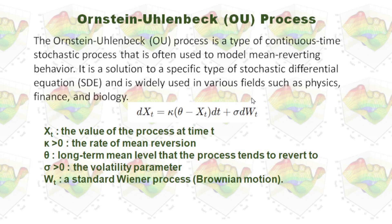Let's take a look at this formula. x(t) is the value of the process at time t. Theta is the long-term mean level that the process tends to revert to. Kappa is the rate of mean reversion — a large kappa causes x(t) to revert to theta more quickly. Sigma is a volatility parameter, and W(t) is a standard Wiener process.